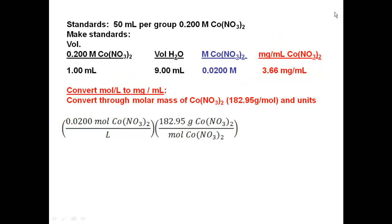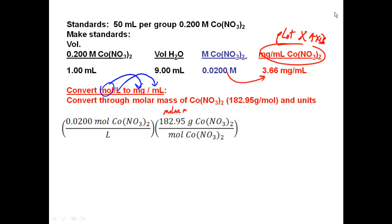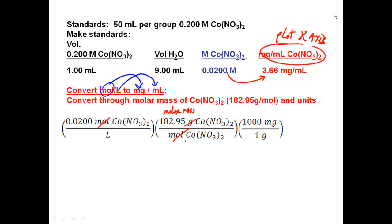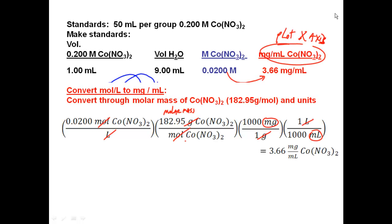Multiply by a conversion factor between milliliters and liters so that liters cancel, leaving milligrams per milliliter. This gives a final answer of 3.66 milligrams per milliliter of cobalt nitrate, which is what you record. You'll have to do this calculation for each of the standards shown in the previous table.